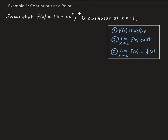So let's first take the limit of this function as x approaches negative 1. Using one of the operations for limits, we can rewrite this as the limit as x approaches negative 1 of x plus 2x to the fifth, all raised to the fourth power.